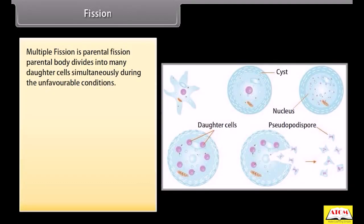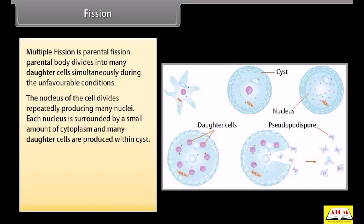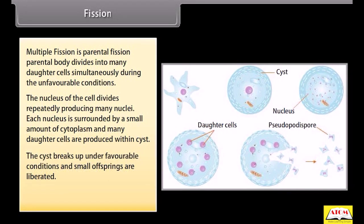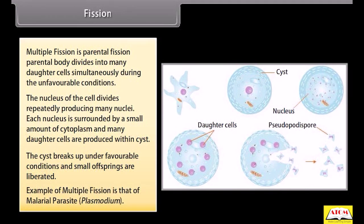Multiple fission is when the parental body divides into many daughter cells simultaneously during unfavorable conditions. The nucleus of the cell divides repeatedly, producing many nuclei. Each nucleus is surrounded by a small amount of cytoplasm, and many daughter cells are produced within a cyst. The cyst breaks up under favorable conditions and small offspring are liberated. An example of multiple fission is the malaria parasite Plasmodium.